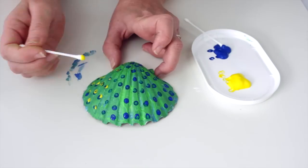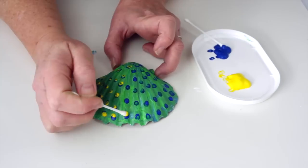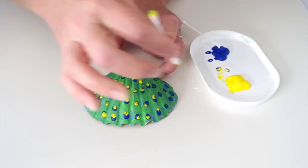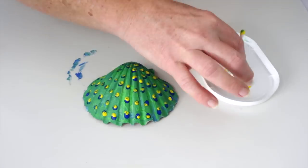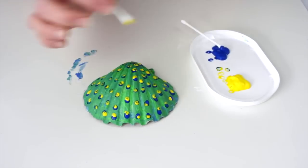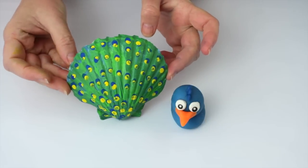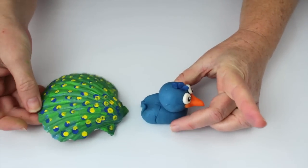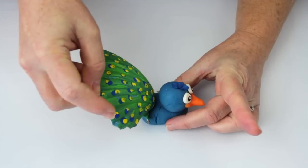Dip the other cotton bud into the yellow paint. Dab the cotton bud just off center of the blue dot. Allow the paint to completely dry before attaching the shell to the play-doh peacock. To fit the shell into the play-doh, press the shell into the back of the peacock and mold the play-doh around the shell so the shell stands upright.